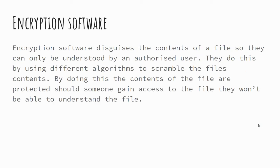Encryption software is basically software that is used to disguise the contents of a file so that it can't be understood by an unauthorized user. We've looked at this previously when we looked at software security earlier in this unit. You could have potentially sensitive data that you might encrypt — that would scramble it up and disguise the data in that file so that someone else wouldn't be able to view it and understand it.